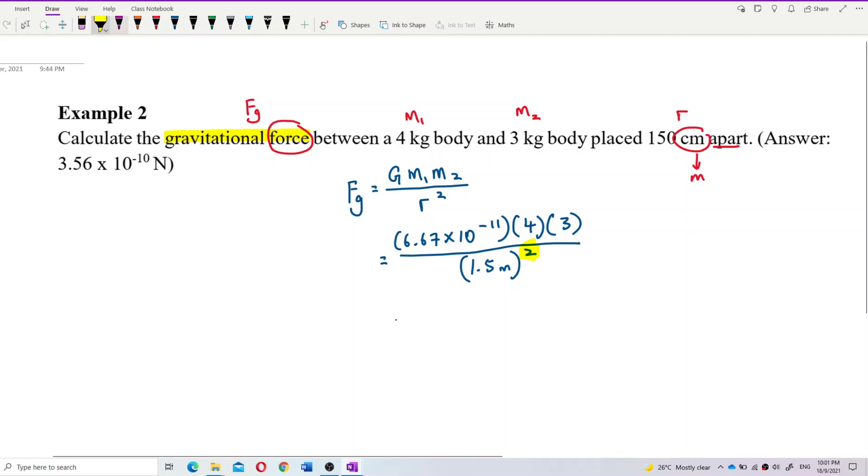So let us check the answer. So I got the answer. The answer is 3.557, 3.557 exponent negative 10. Negative 10. So correct.